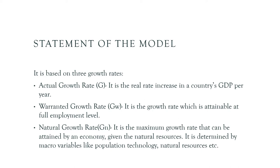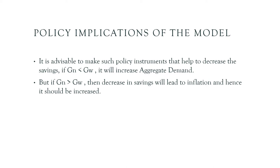The actual growth rate is the real rate of increase in GDP per year. The warranted growth rate is attainable at the full employment level — it is the growth rate at full employment. The natural growth rate is the maximum growth rate which could be attained by an economy using its natural resources, and it is determined by macroeconomic variables like population, technology, and natural resources.